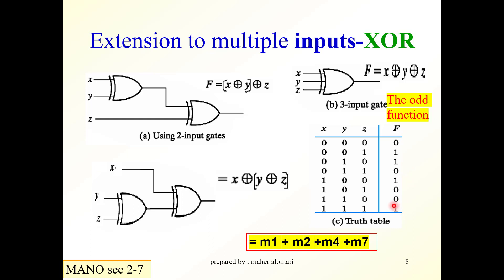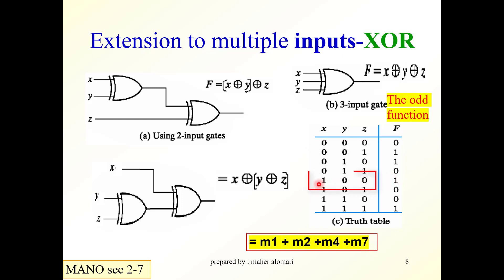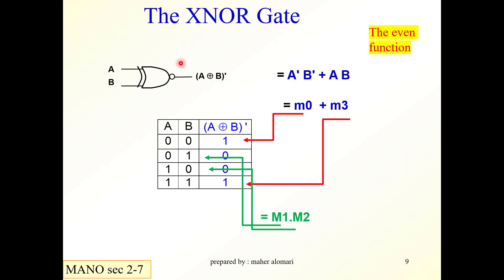Remember that the exclusive OR is the odd function. The output is equal to 1 whenever the number of ones at the input is odd. For three inputs, having three ones (minterm 7) is also an odd number, so the output is 1. That's why it's called the odd function.